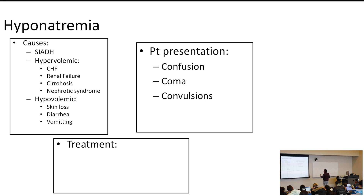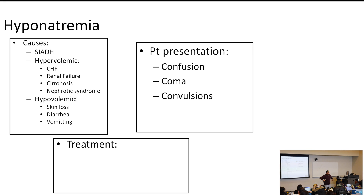How do patients present with hyponatremia? Confusion, coma, convulsions. For example, I had a patient come into the ICU where the mom wasn't mixing formula properly — she was adding too much free water. Because the baby's kidneys are so immature, the baby came in seizing because they became increasingly hyponatremic. This is a real-world scenario and could be a testable scenario as well.